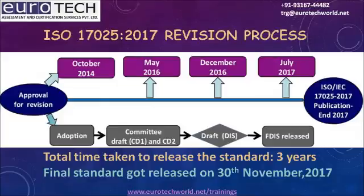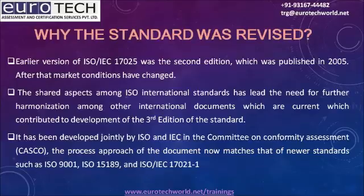ISO 17025-2017 Revision Process: In October 2014 it was adopted. In May 2016 the committee made drafts CD1 and CD2. In December 2016 the DIS was made. In July 2017 the FDIS was released. Total time taken to release the standard was 3 years. The final standard was released on 30 November 2017.